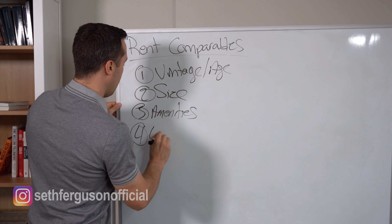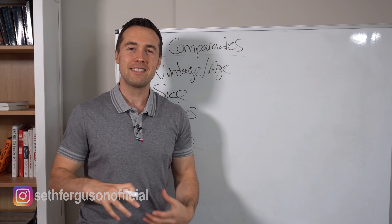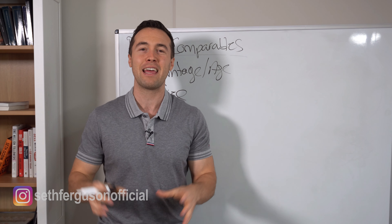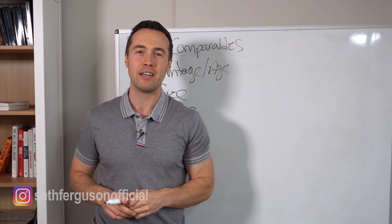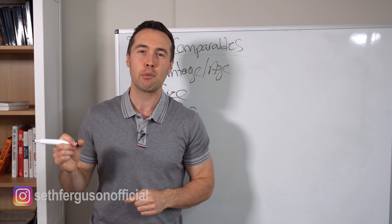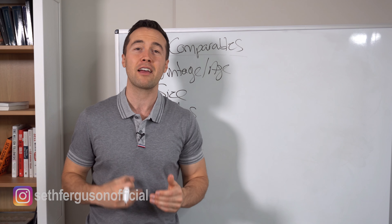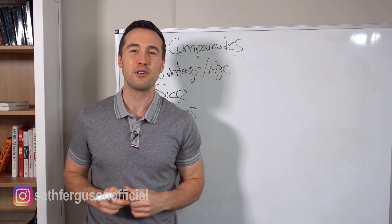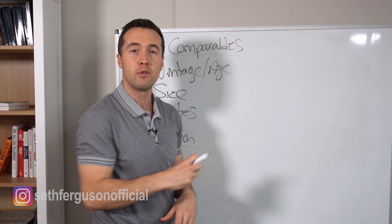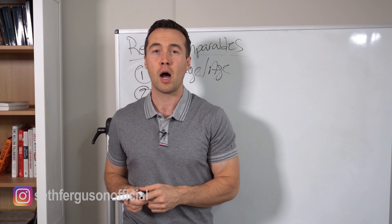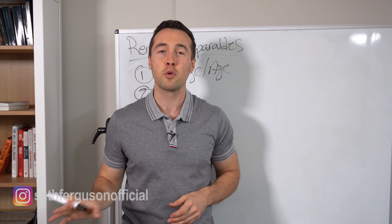Number four is location — location, location, location, as they say in real estate. Let's say our subject property is located in a premium area while all other comparables of the same vintage, size, and amenities are in less desirable areas. Chances are we'll be able to charge a premium because tenants will pay more for a premium location. We really have to assess whether we're in a superior, neutral, or inferior location relative to our comps — that will dictate whether we apply comparable rents at 100% or knock off, say, 10% to account for location variances.